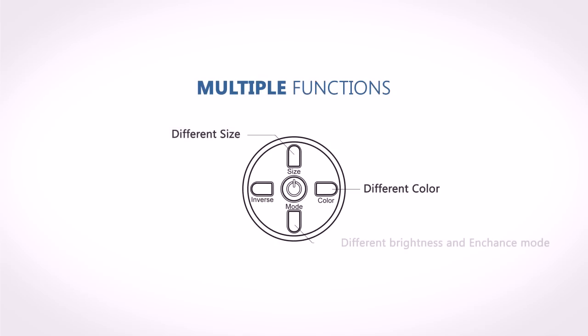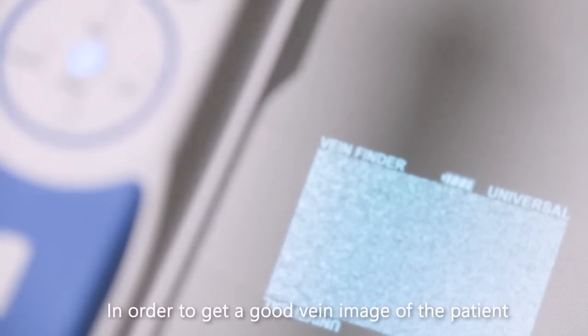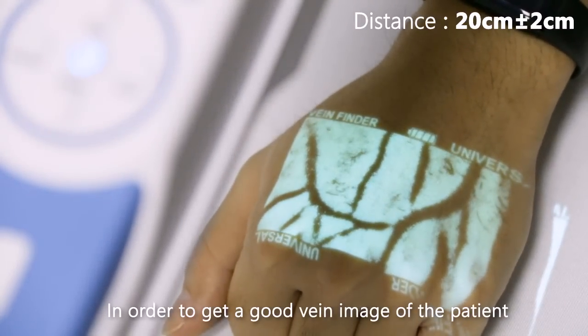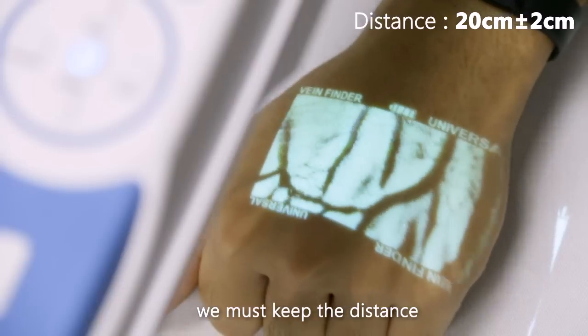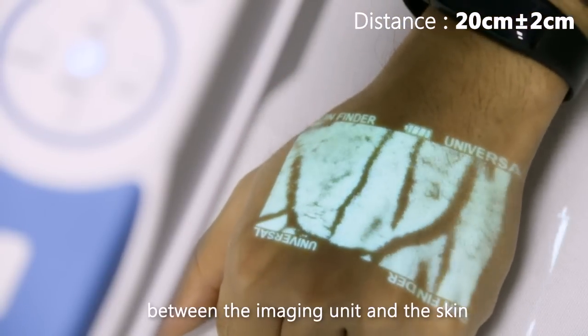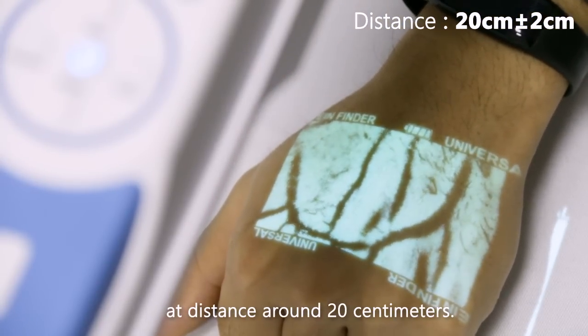VS 400 has multiple functions with different colors, different sizes, different display modes, and inverse mode. To get a good vein image of the patient, keep the distance between the imaging unit and the skin at around 20 centimeters.